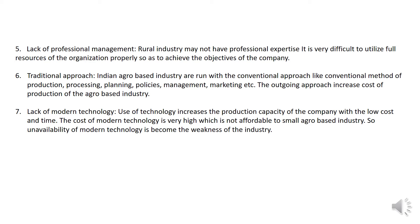The next weakness is lack of modern technology. In India, most people are doing traditional farming and do not use innovative technology. Use of technology increases the production capacity of a company with lower cost and time. However, the cost of modern technology is very high and is not affordable for small-scale farmers, so unavailability of modern technology becomes a weakness of the industry.